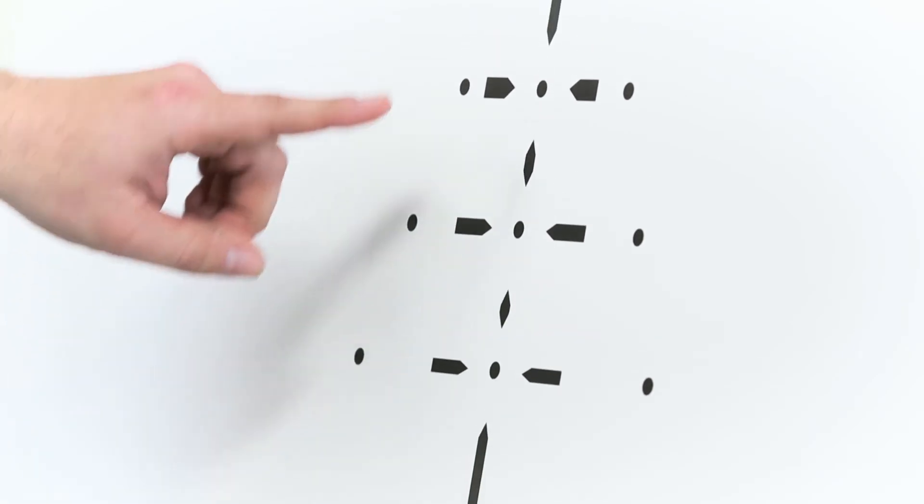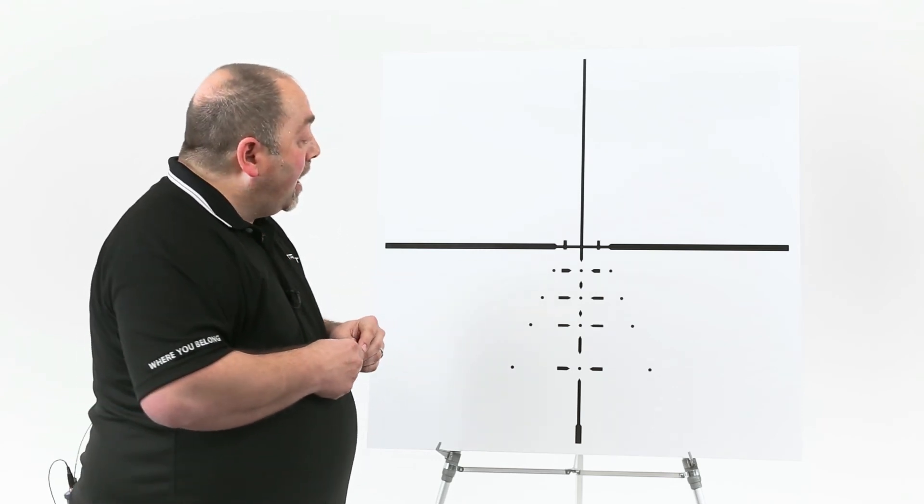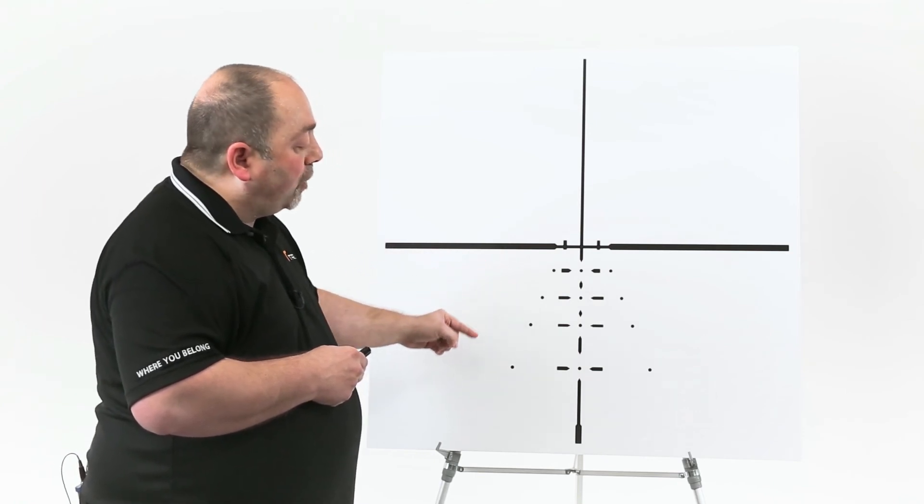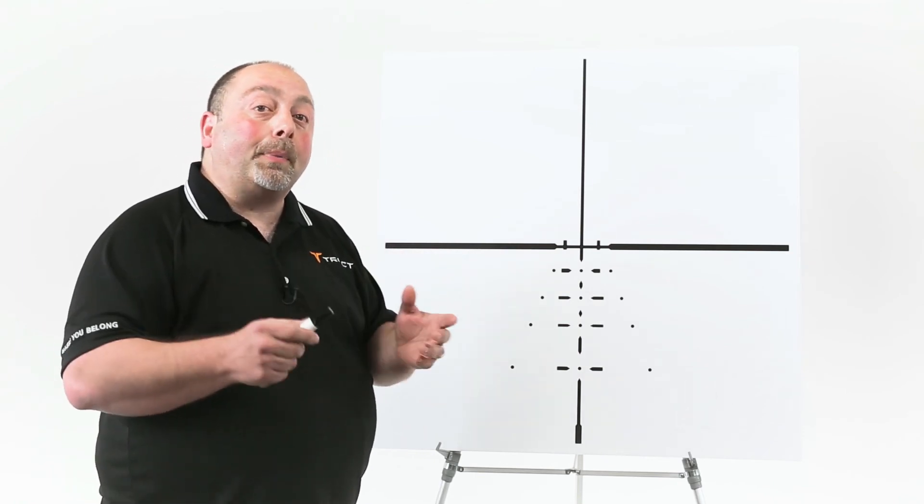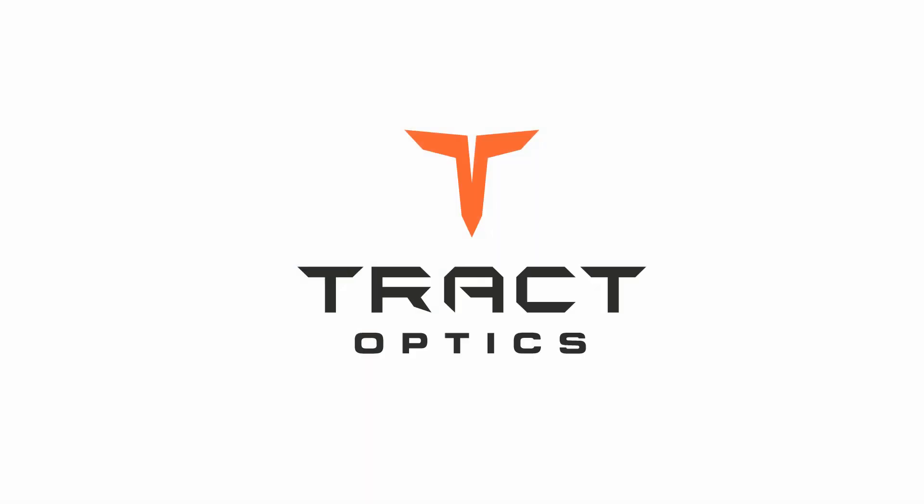We suspended the dots so the half-minute dots do not obscure the target especially at long range. And then what we did is add 10 mile per hour windage correction dots. So you have a complete system for long range shooting with the Impact BDC and the Torik rifle scope.